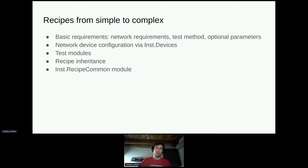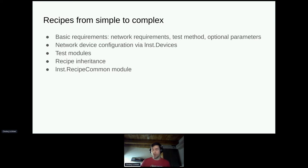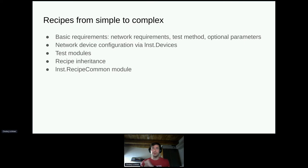What are the actual features of LNST and why is it a good idea to use it? Going from simple to complex: you start with basic requirements — you describe the network requirements, the topology, and what the hardware looks like. You define your test method and can optionally provide parameters. LNST then provides you with abstractions for network device configuration via the lnst.devices package, which runs directly on your test machines and connects over netlink to your kernel to configure everything.